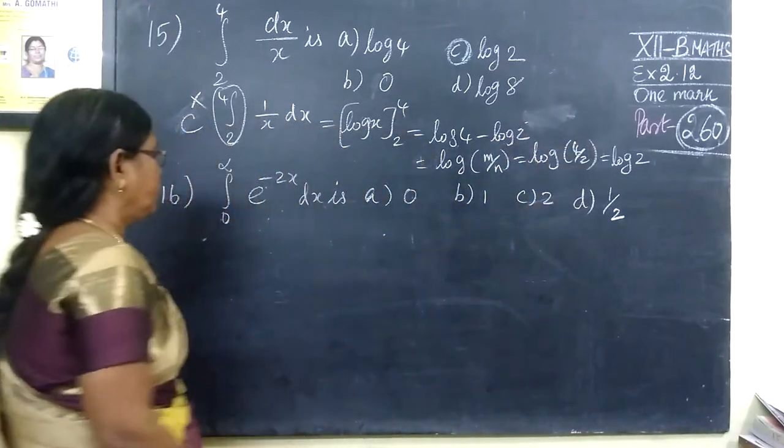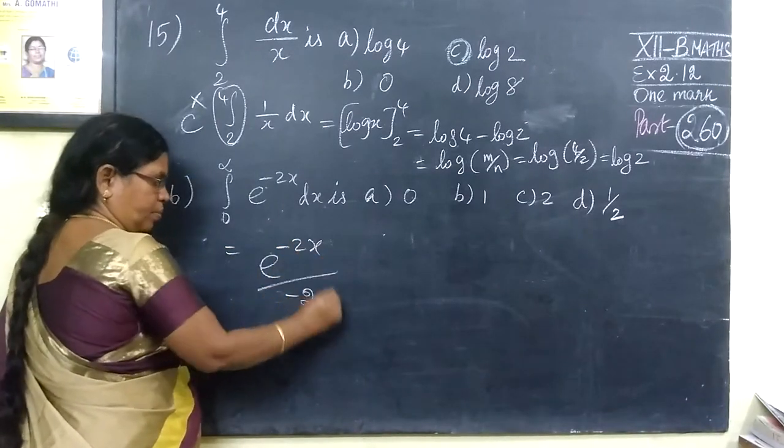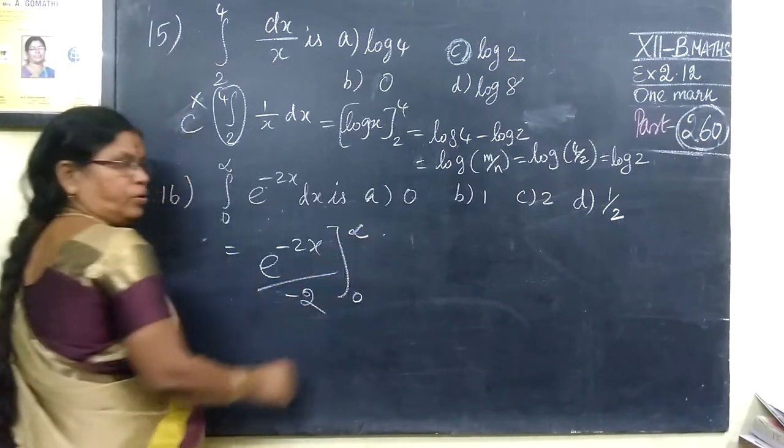Now come to the next one. Question 16. e to the power minus 2S by minus 2, limit 0 to infinity.